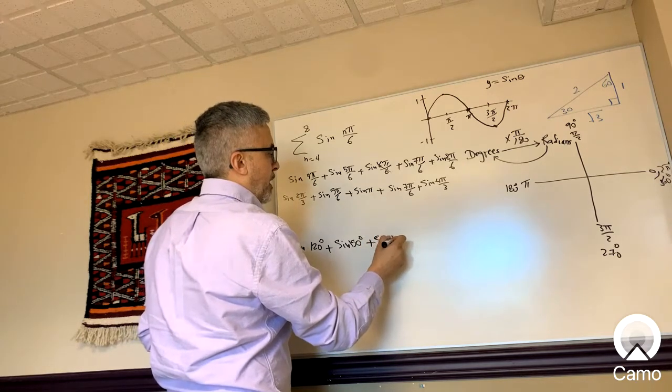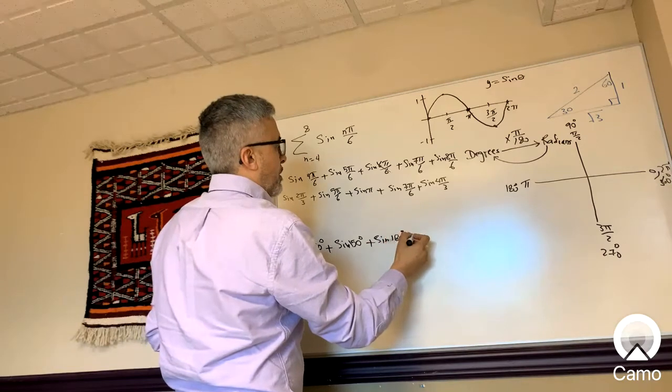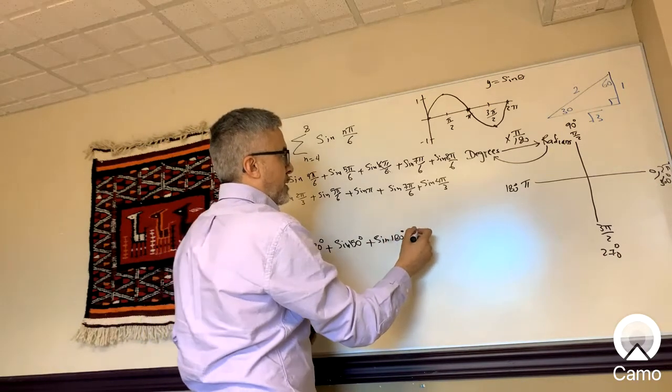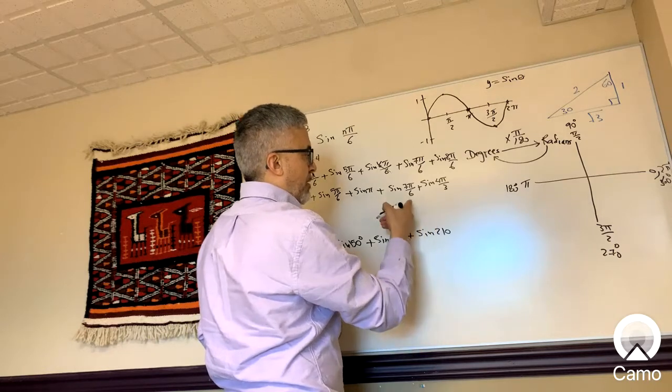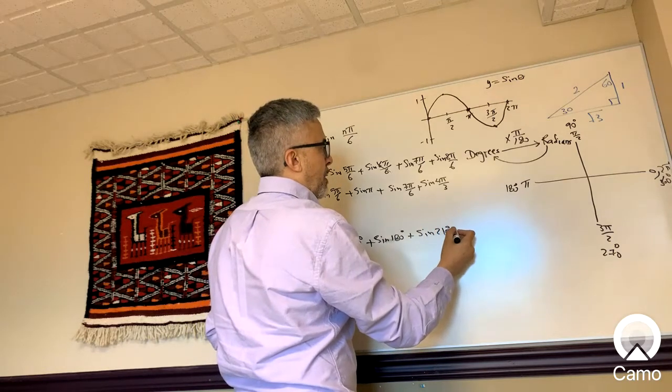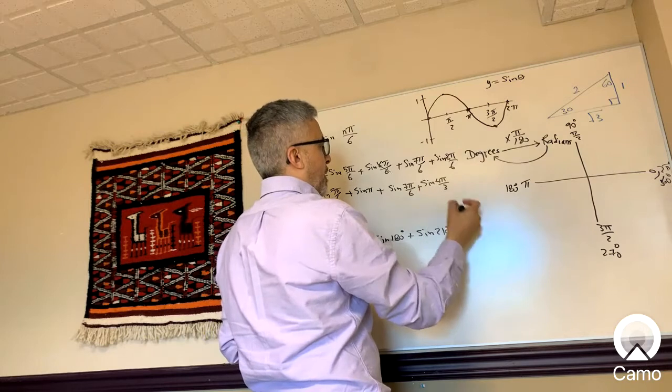Sine 180 plus sine 210, that's 7π/6, and then plus sine 4π/3.